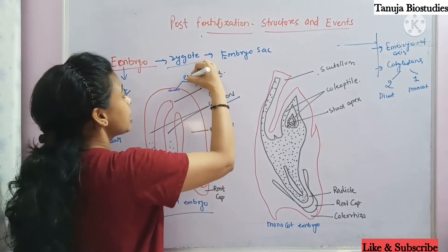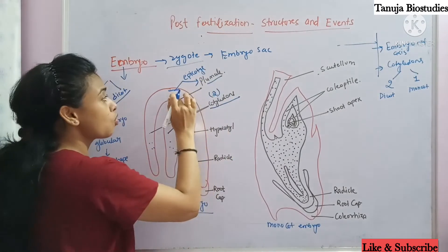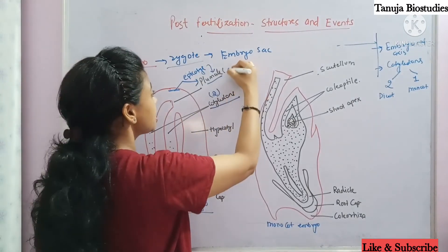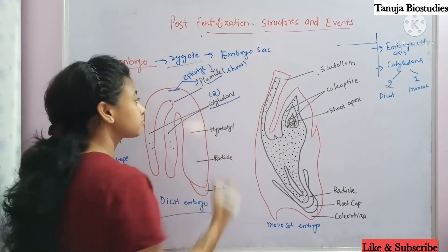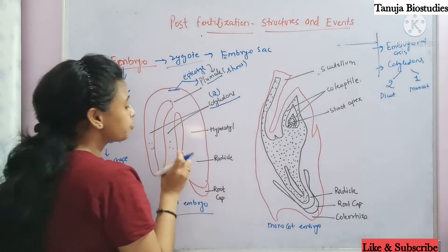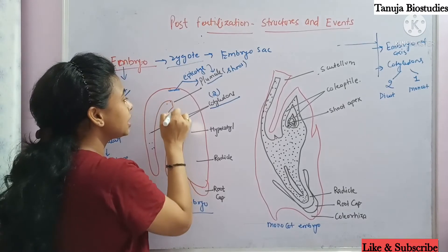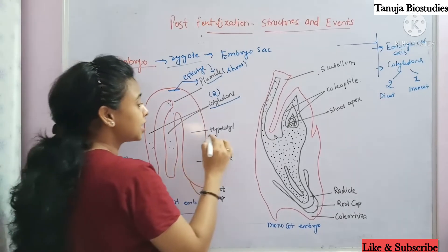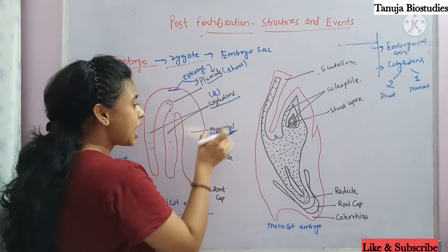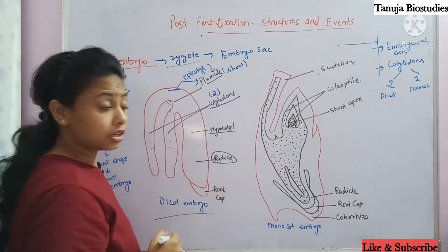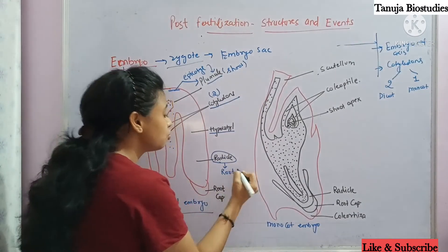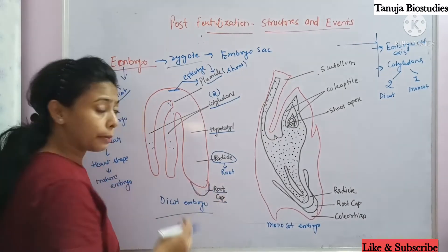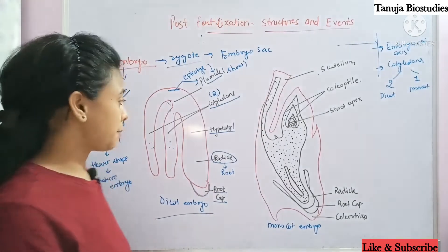The embryonal axis is present. The portion above the attachment of the cotyledon is called epicotyl, which ultimately makes the plumule, or you can say makes the shoot. The portion of the embryonal axis below the level of cotyledon attachment is called hypocotyl, and it leads to formation of the radicle, which basically makes the root. Below this there is a cap-like structure, the root cap, which works to protect the root. This is about dicot.